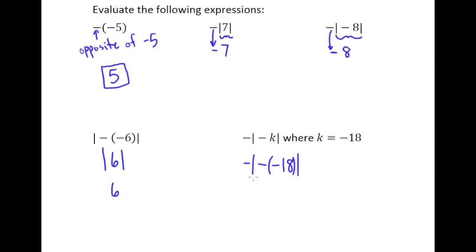And so the first thing we'll do here is we'll figure out what's going on inside of the absolute value. The opposite of negative 18 is of course 18. We still have the absolute value bars here. And then this negative comes along for the ride.